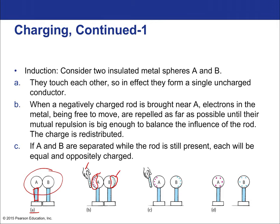While continuing to hold the rod near A but not touching it, you then pull sphere B away. Now you've created two equal and oppositely charged spheres—one with a net positive charge and one with a net negative charge. Remove the rod and they remain charged, though they'll slowly lose their charge over time because there's no perfect insulation, and they'll gradually become neutral with their environment.